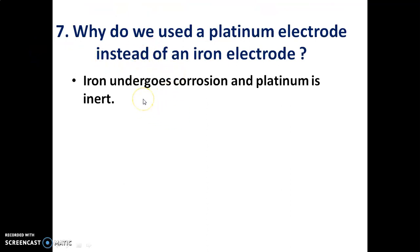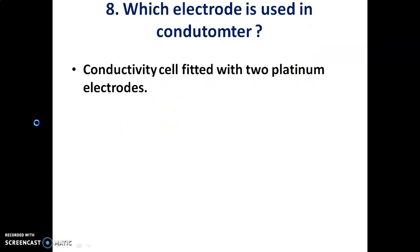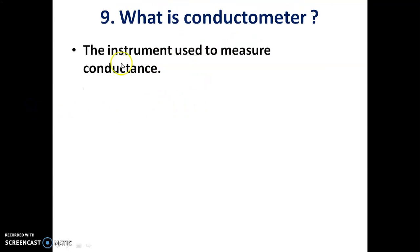In this experiment, we are using a platinum electrode instead of an iron electrode, because iron undergoes corrosion whereas platinum is inert. Which electrode is used in this experiment? We are using platinum electrodes — specifically, platinum sheets.